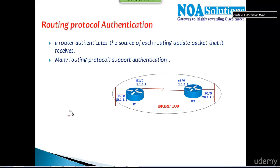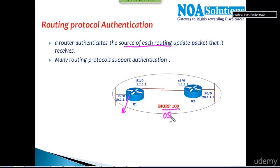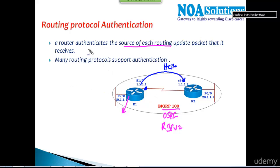In the next couple of videos we'll be discussing routing protocol authentication. Authentication is a method used by the router to authenticate the source of each and every routing update. For example, router one running EIGRP, OSPF, or RIP version 2 — by default, when you advertise an interface, the router sends a hello message, then sends updates and acknowledgements, and finally exchanges routes to build the routing table. This is a dynamic process which happens in all dynamic routing protocols.